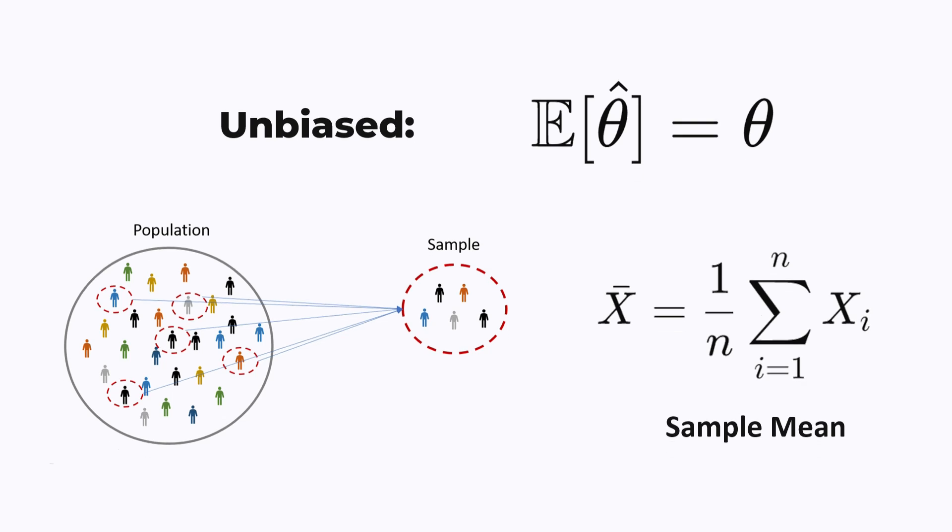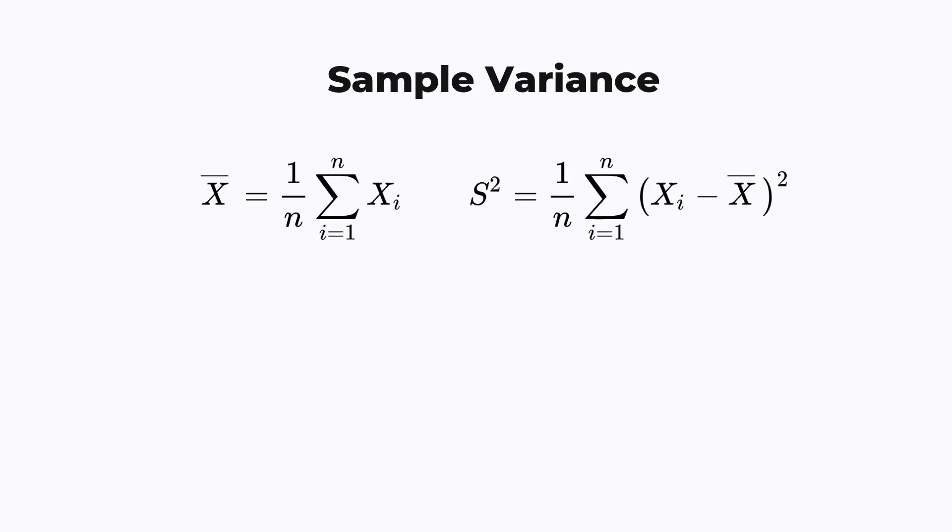The most common example given in statistic courses of a biased estimator is the variance estimator. If we try to estimate the population variance, then the most obvious formula for doing this produces a biased estimator. The expected value of this statistic slightly underestimates the population variance.